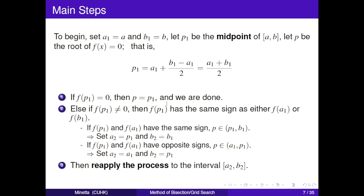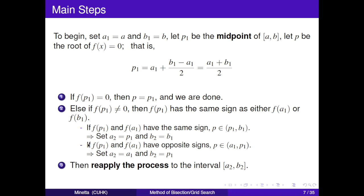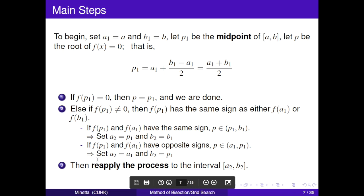Otherwise, if f(p1) and f(a1) have the same sign, p will be in interval [p1, b1]. Then set a2 equals p1 and b2 equals b1. Or if f(p1) and f(a1) have opposite signs, p will be in interval [a1, p1]. Then set a2 equals a1 and b2 equals p1. Now we finish the first process, then reapply the process to the interval [a2, b2].